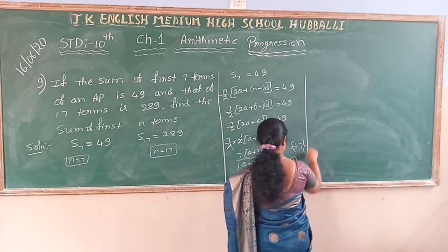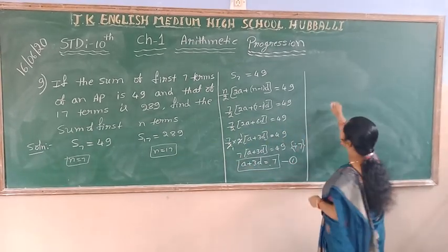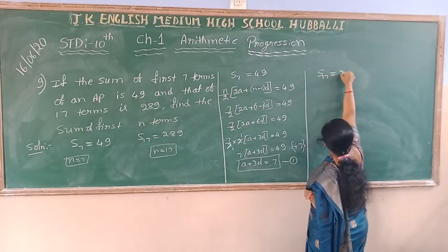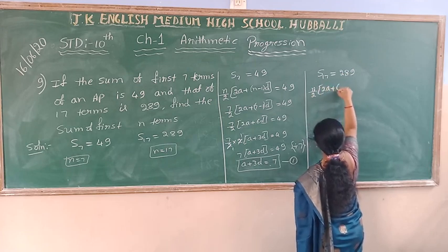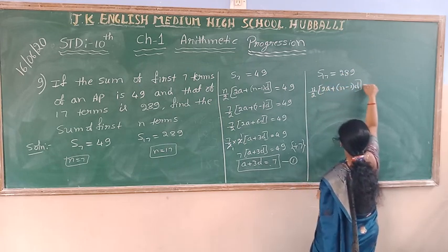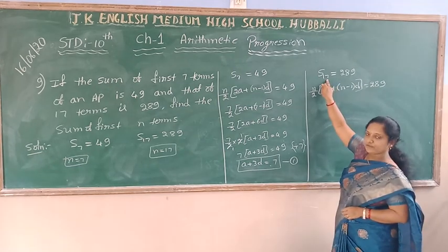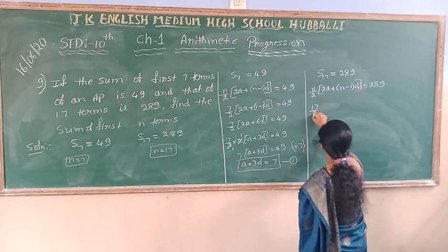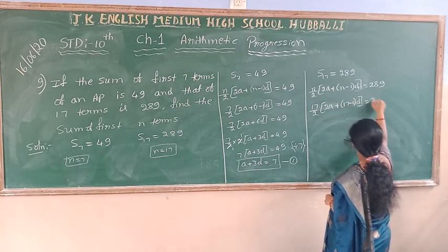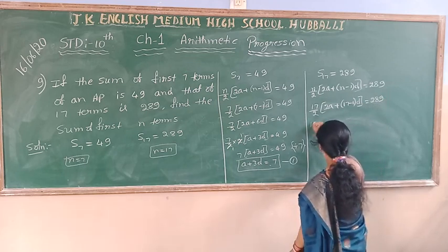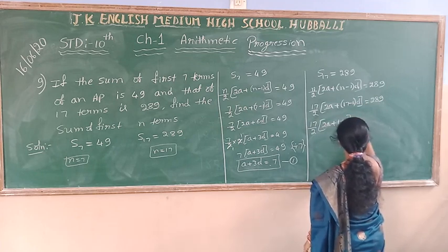In the same way, write the formula for the sum of 17 terms. The sum of 17 terms is equal to 289, so substituting n equal to 17: n by 2 into 2A plus n minus 1 into D is equal to 289. After simplification, 16D gives the next step.